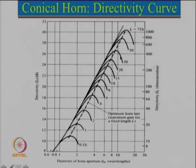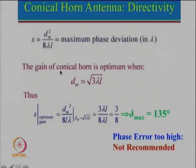Let us see what the textbook says and then we will discuss what should actually be done. Corresponding to these maximum values, one can say that the gain of the conical horn is optimum when the diameter is given by this particular expression. If you recall, this expression is very similar to that of the pyramidal horn antenna or the H-plane sectoral horn antenna.